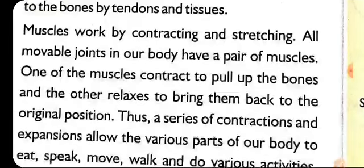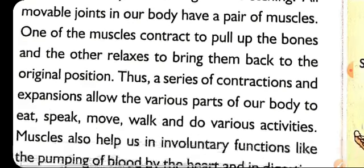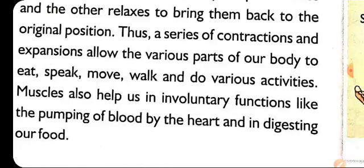Muscles keep on working — they contract and stretch. Contract means when they shorten, stretch means they go back to the original position. All the bones present in our body have two pairs of muscles — one is a contraction muscle and the other is a relaxation muscle. The series of contraction and expansion allows various body parts to move from one position to another.